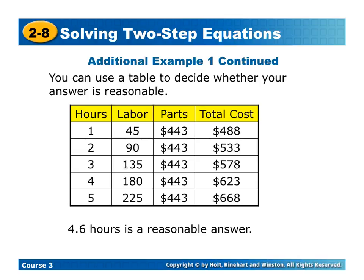Now, we could use a table to decide whether our answer is reasonable. So if you start looking here, for one hour of labor plus the parts, it would be $488. For two hours, $533, $578, $623, $668. So since the bill was in between $623 and $668, at $650, it puts it closer to that $668, so that 4.6 would be a reasonable answer.